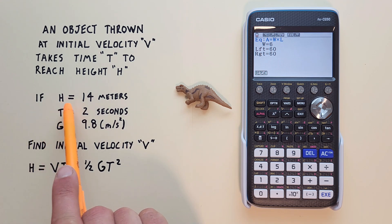If H is 14 meters, T is 2 seconds, and G or gravity is 9.8 meters per second squared, find the initial velocity V. This is our equation here that we'll use.